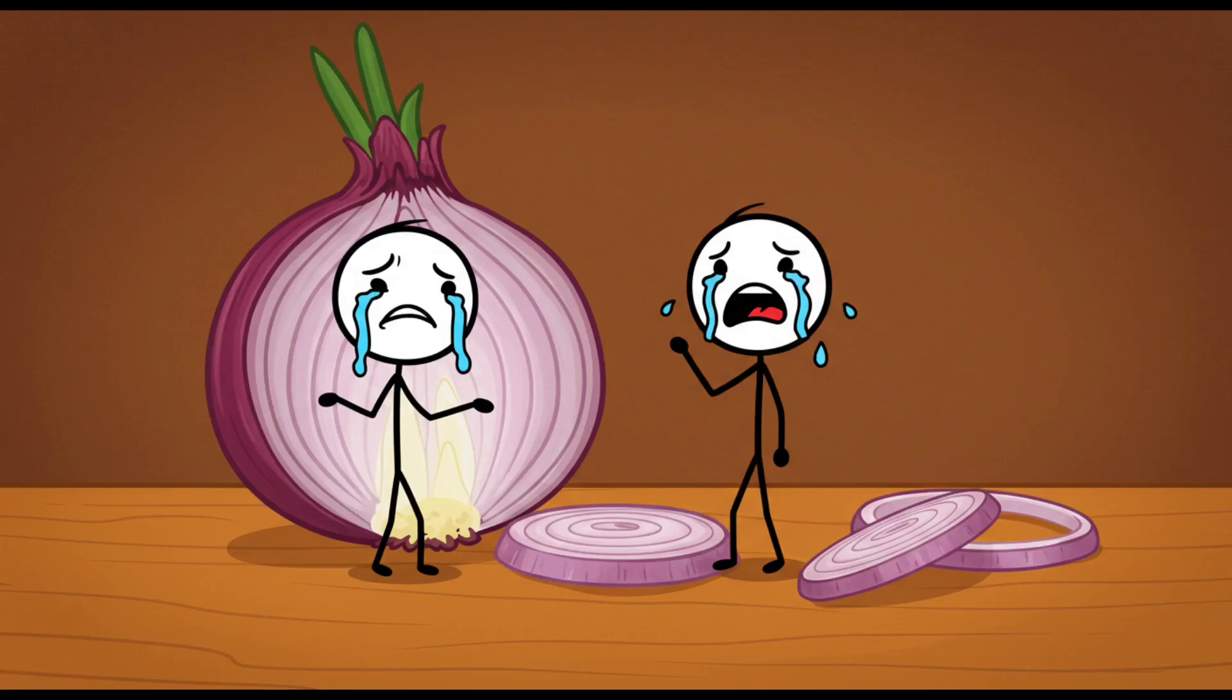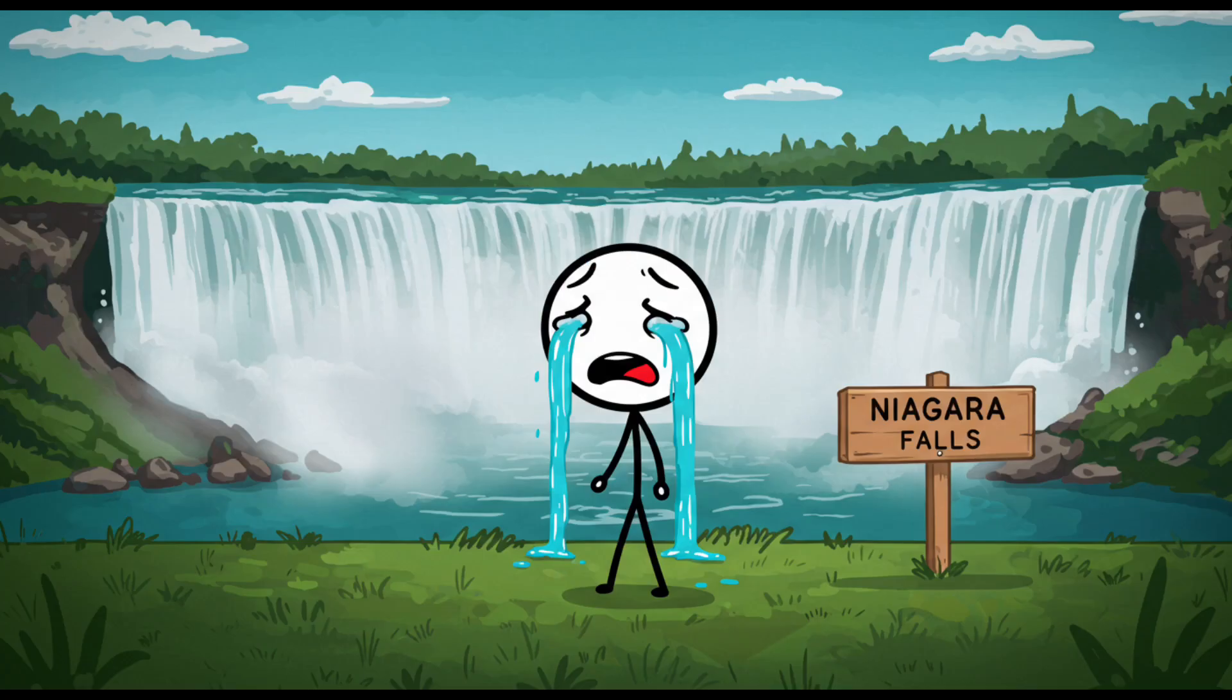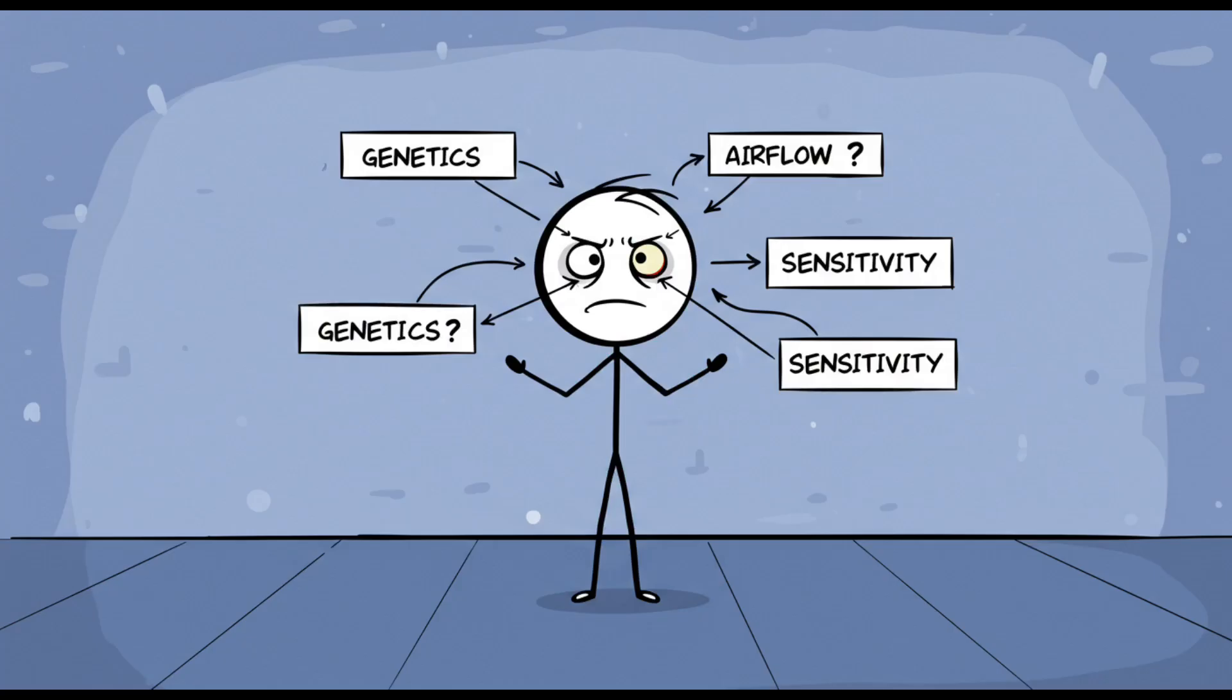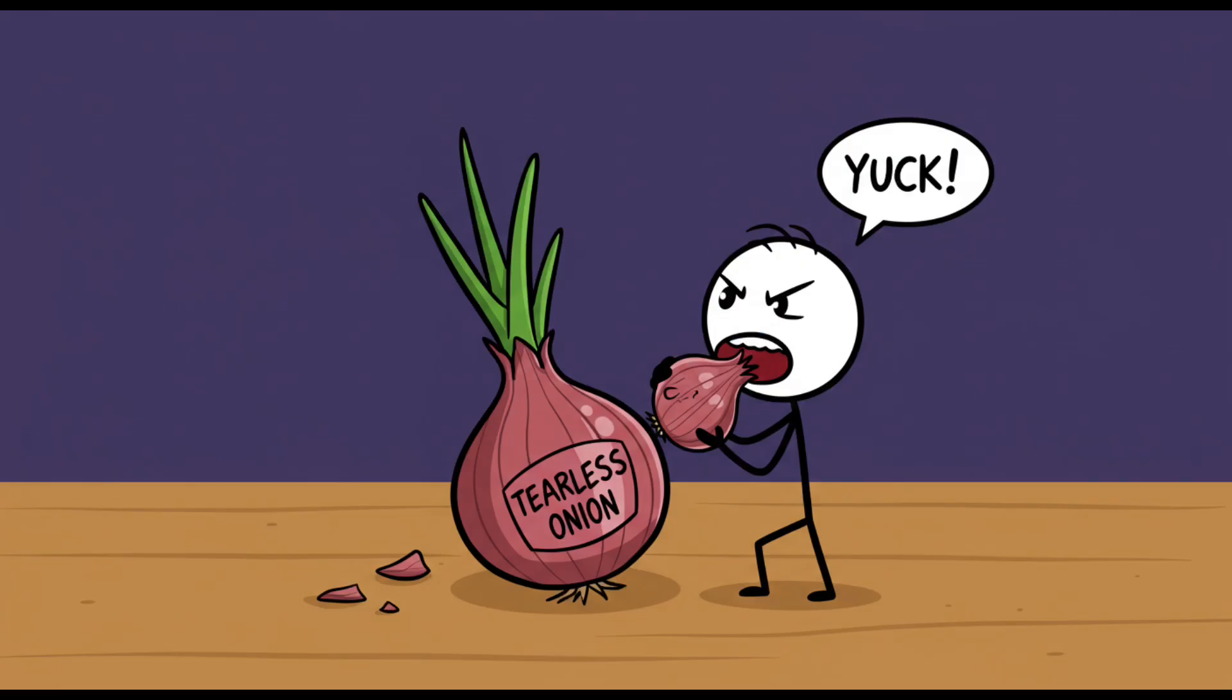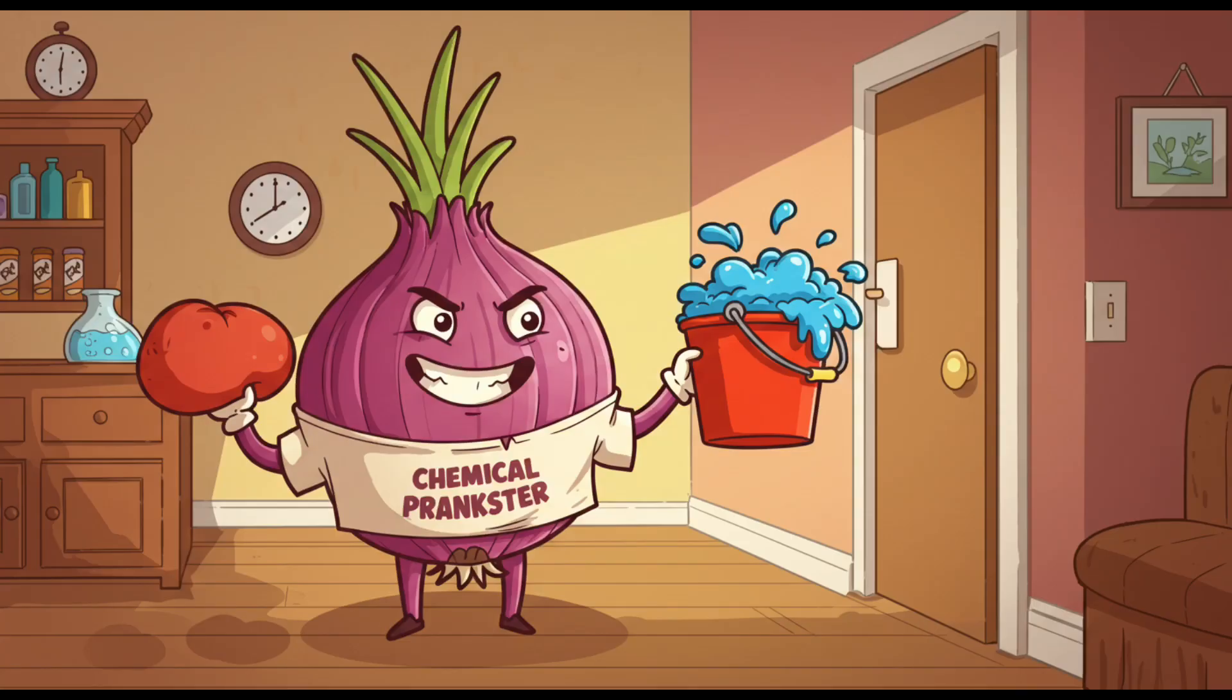And here's where it gets sillier. Not everyone cries the same amount. Some people barely tear up, while others turn into Niagara Falls. Genetics. Eye sensitivity. Kitchen ventilation. No one knows all the variables. You can buy tearless onions that were engineered to skip the crying chemical, but of course they taste worse, proving once again that science solves problems by ruining snacks.